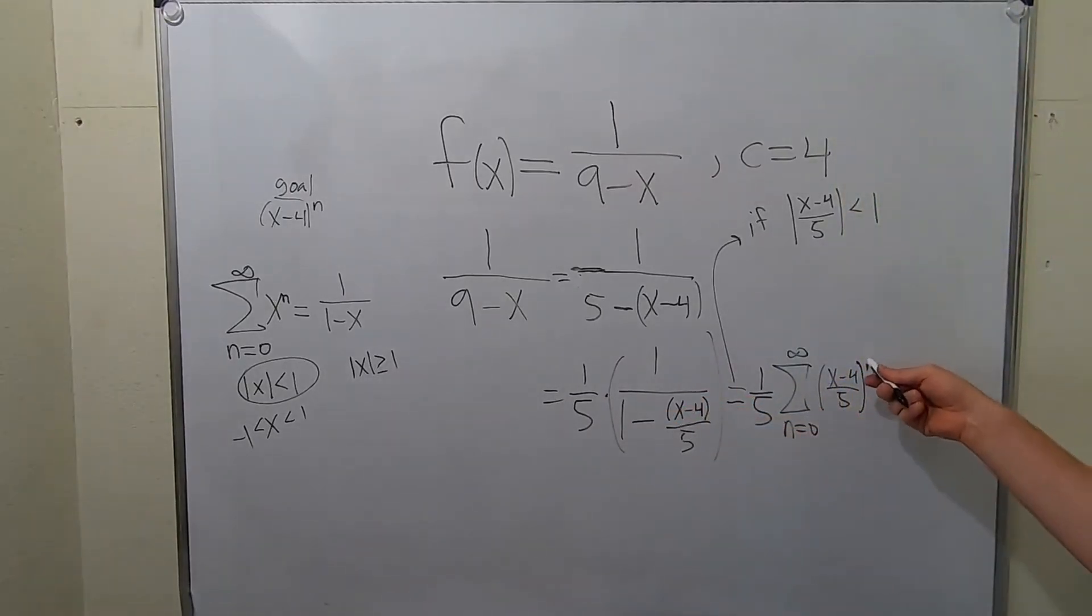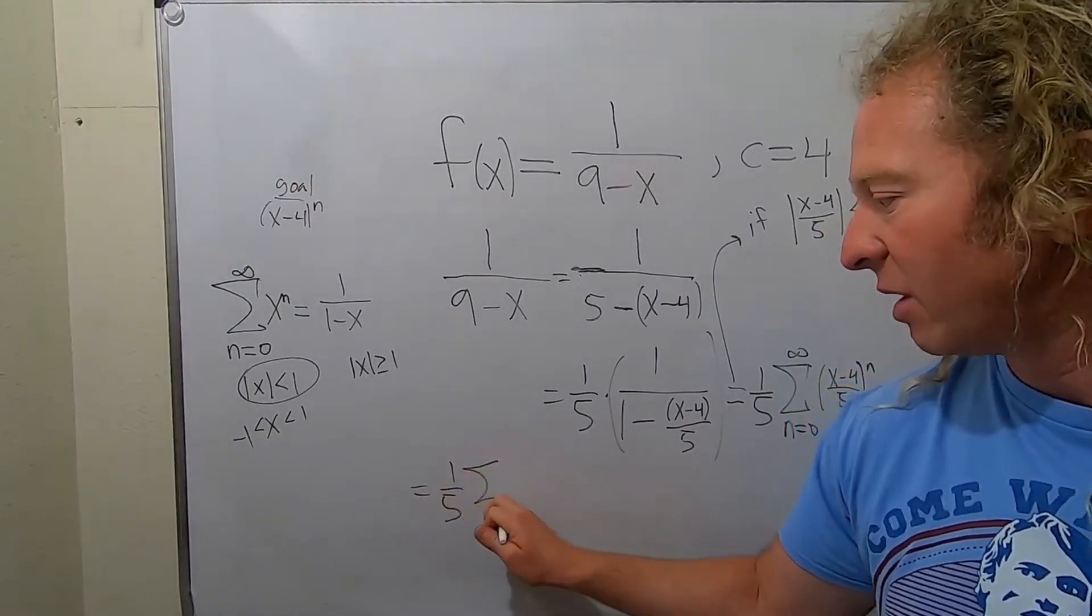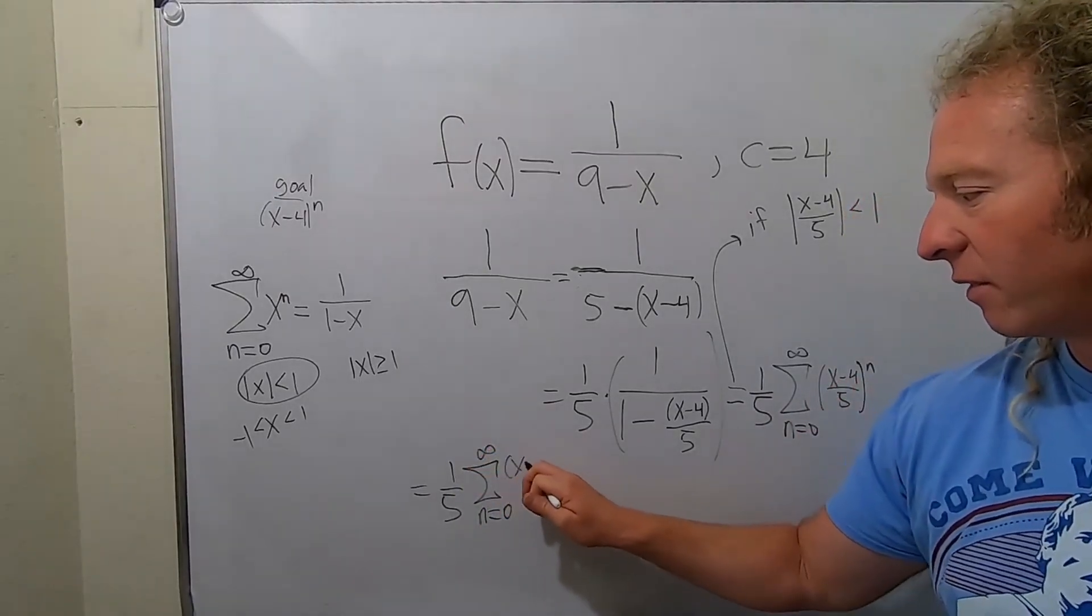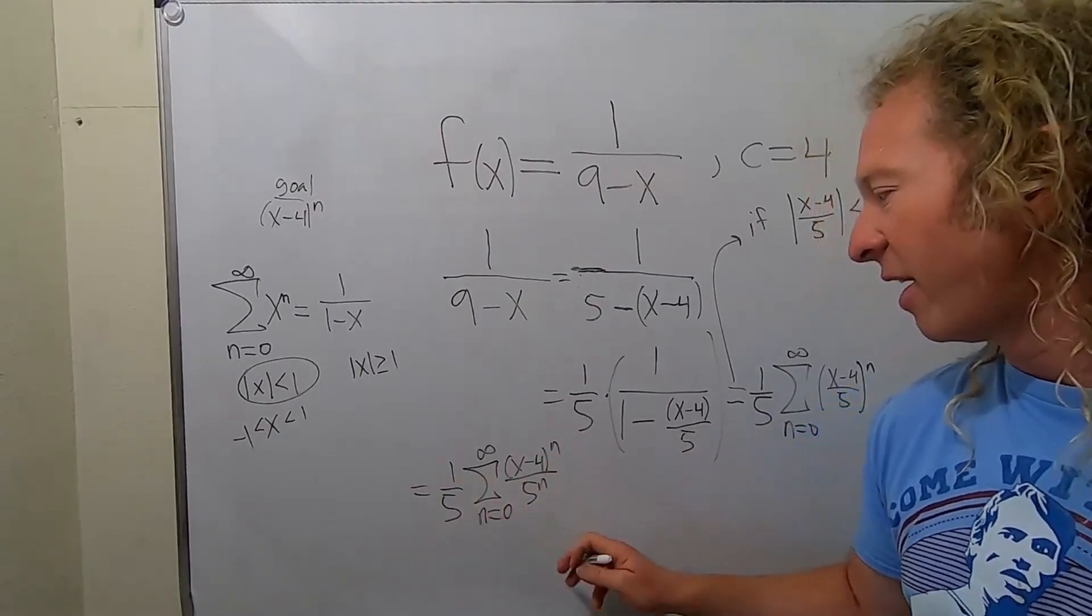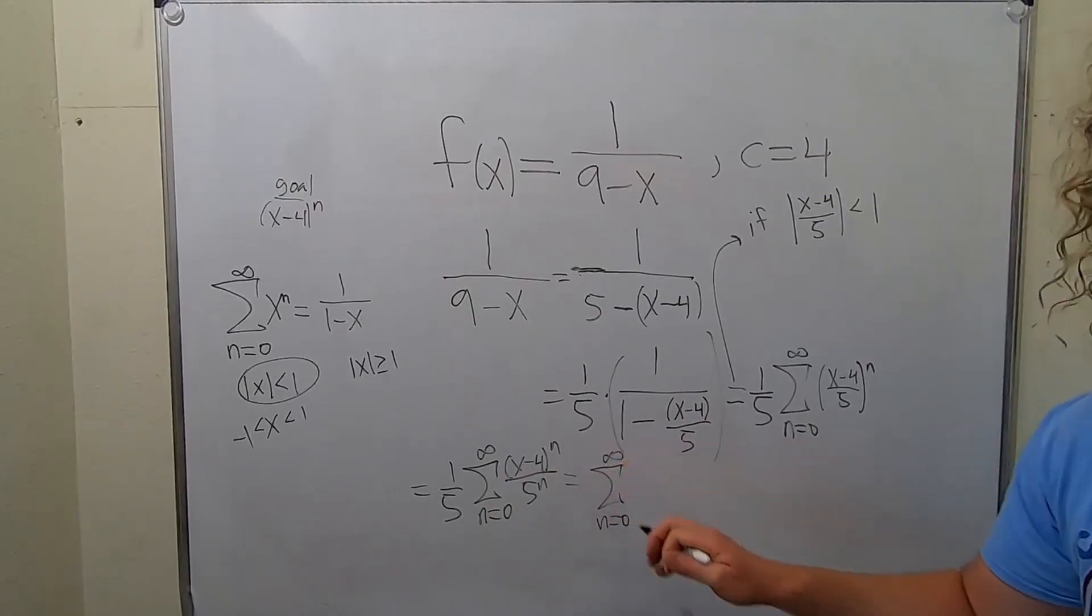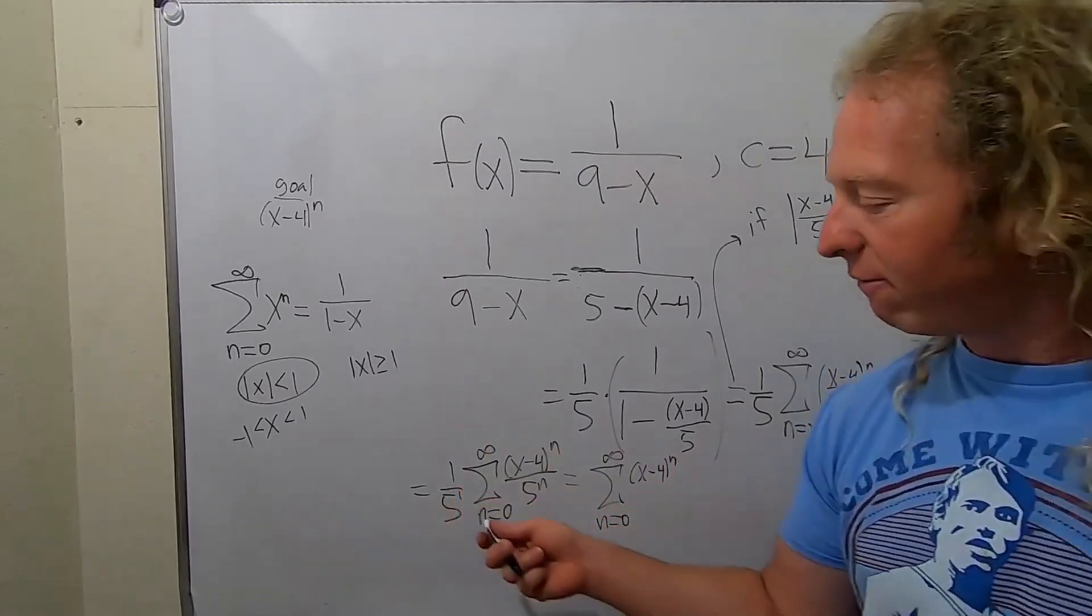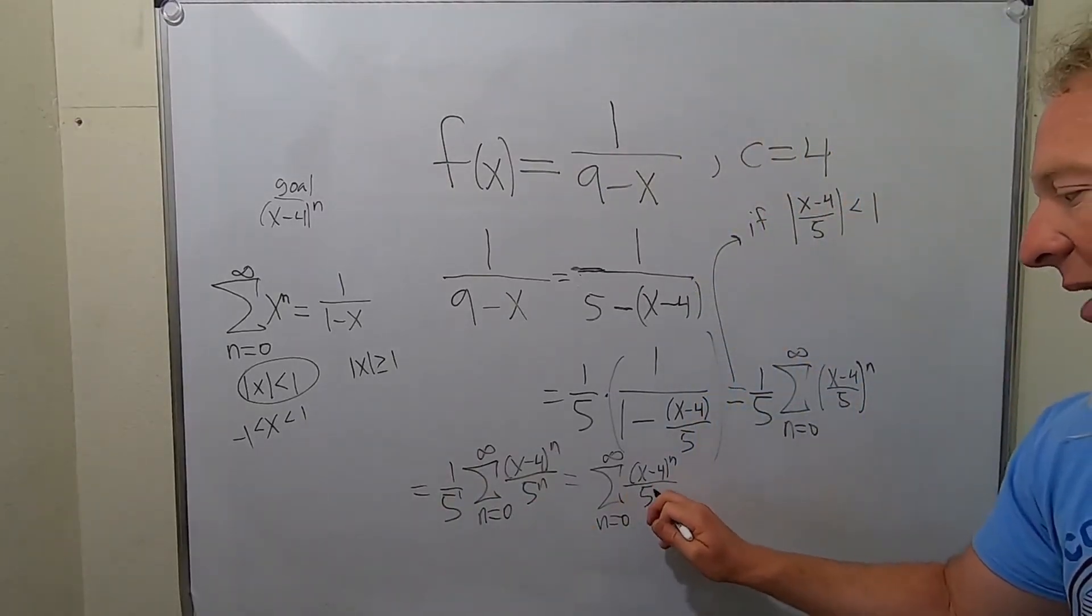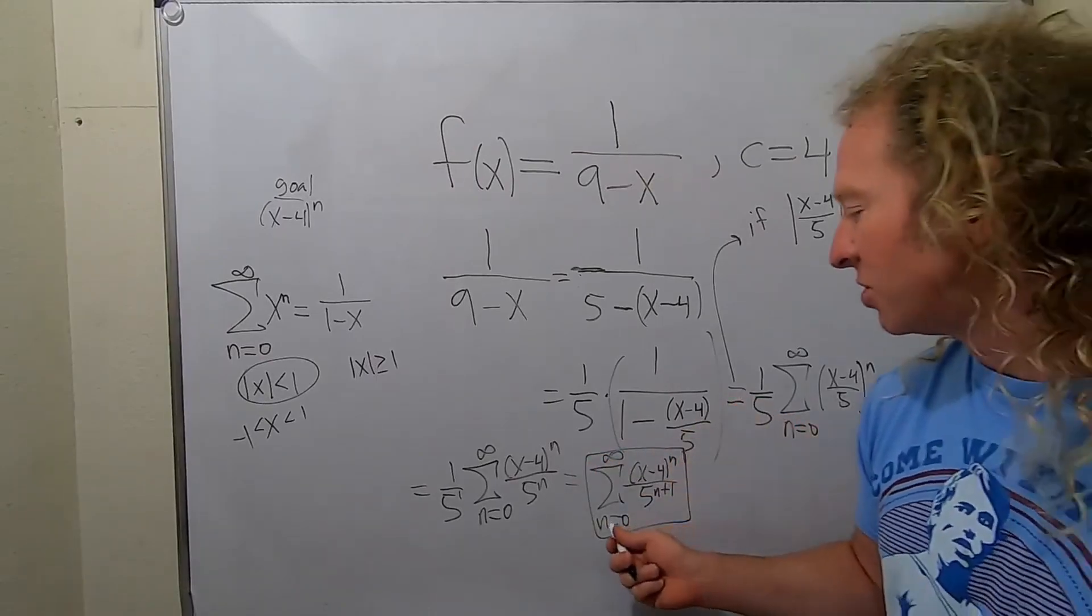Let's go ahead and clean this up. Basically we can raise each piece to the nth power. So this is 1 fifth infinite sum as n runs from 0 to infinity of x minus 4 to the n over 5 to the n. And now we can just distribute the 5. So this is the infinite sum as n runs from 0 to infinity of x minus 4 to the n. This is 5 to the 1. 5 to the 1 times 5 to the n is 5 to the n plus 1. You add the exponents. Super key.